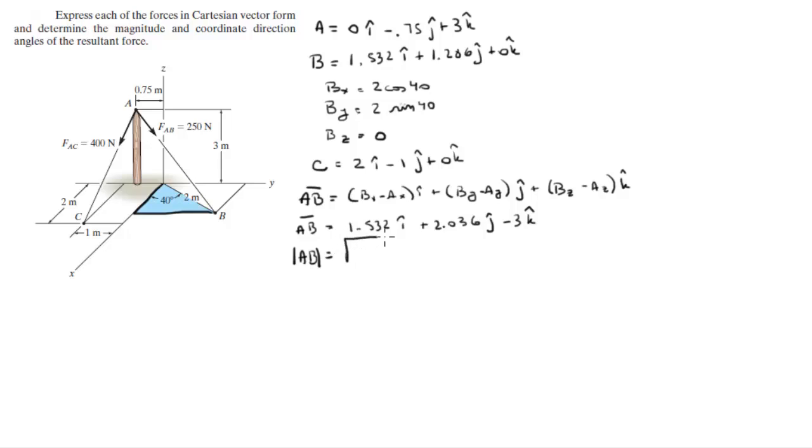So now we need to find the magnitude of AB, and the magnitude can be found by doing the x squared plus y squared plus z squared of the vector above, and you're going to get that the magnitude is equal to 3.936.